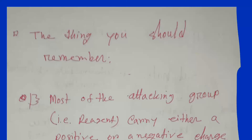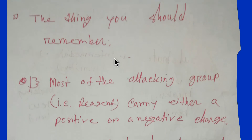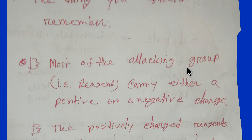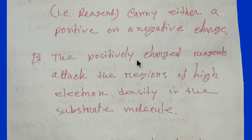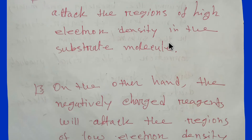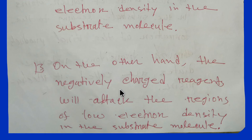The things that we should remember: most of the attacking groups or reagents carry either a positive or a negative charge. The positively charged reagent attacks the region of high electron density in the substrate molecule. On the other hand, the negatively charged reagent attacks the regions of low electron density in the substrate molecule.